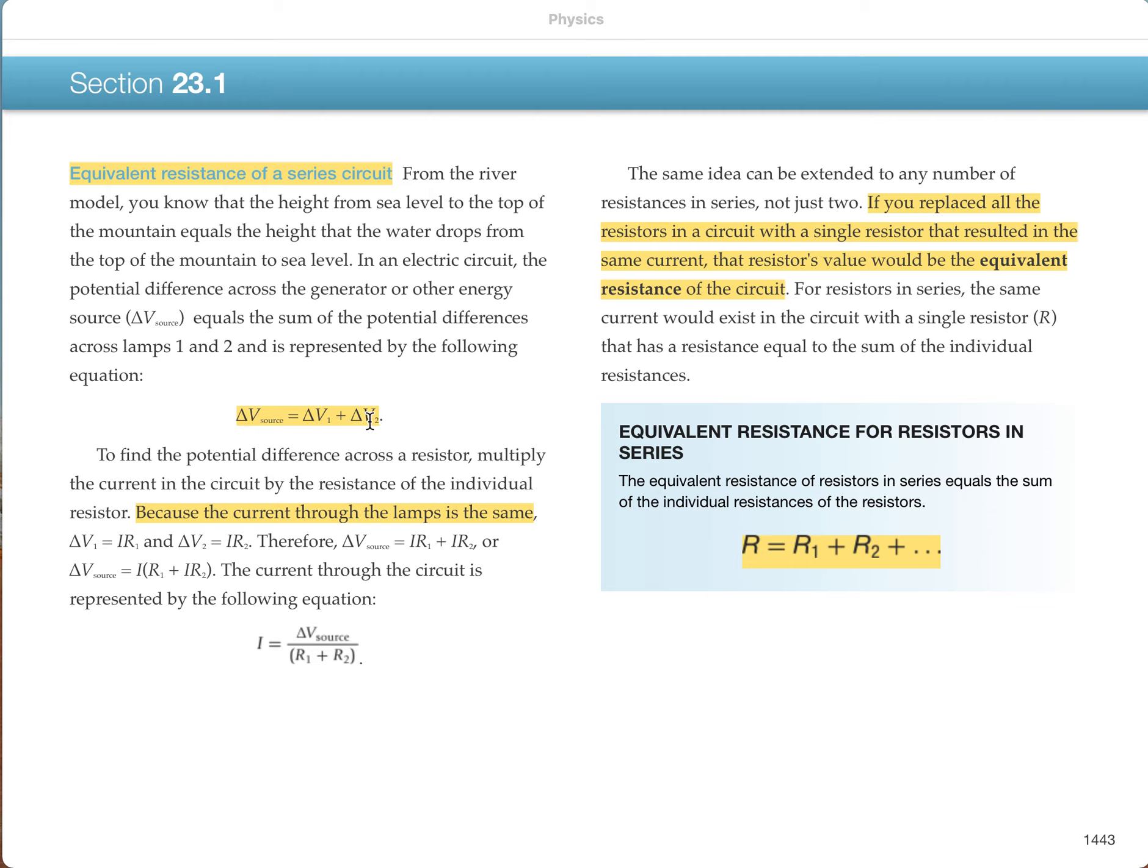In a series circuit, the equivalent resistance is simply the sum of all the resistors.